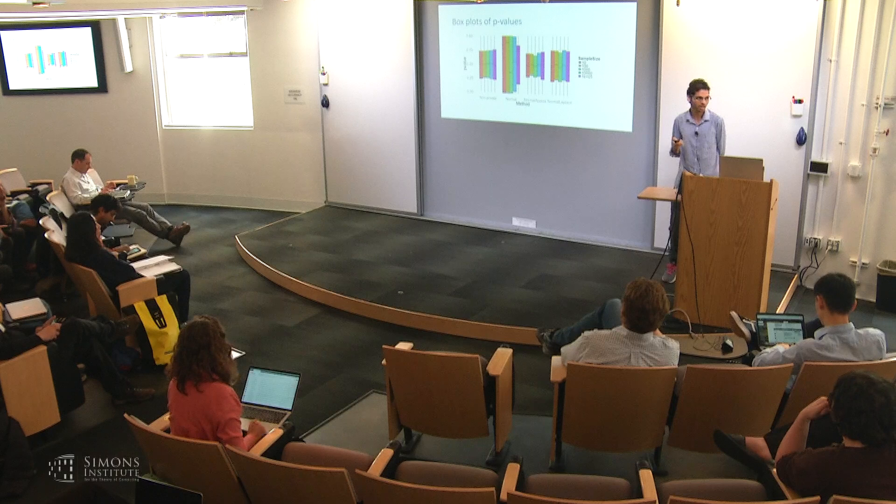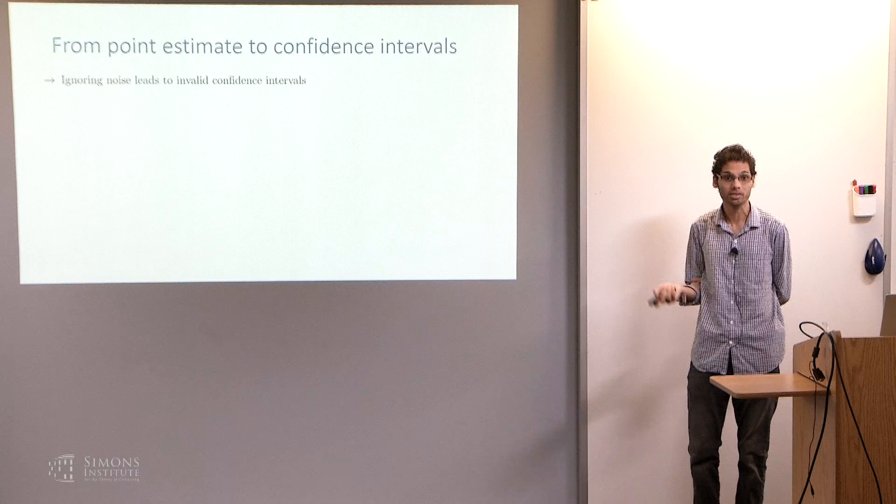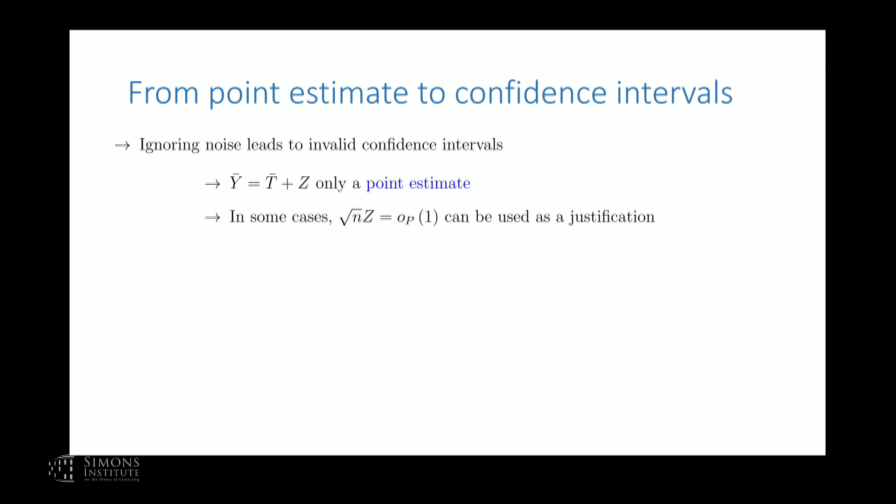The moral of the story: ignoring the noise led to invalid hypothesis tests, which implies invalid confidence intervals. Going from the point estimate to the confidence interval, we cannot just ignore the noise and truncation process. Sometimes it's okay when n is very large and the noise term goes to zero in probability, but generally in finite samples this doesn't work. We can resolve this by incorporating the distribution of the noise — using a normal-Laplace or truncated-normal-Laplace approximation.